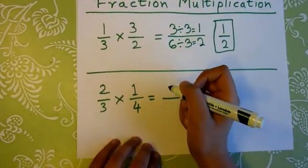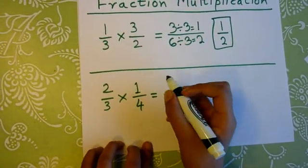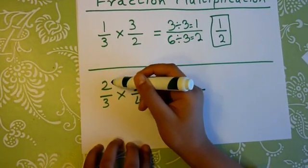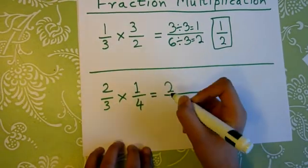Another example is 2 over 3 times 1 over 4. So, again, 2 times 1 is 2, and 4 times 3 is 12.